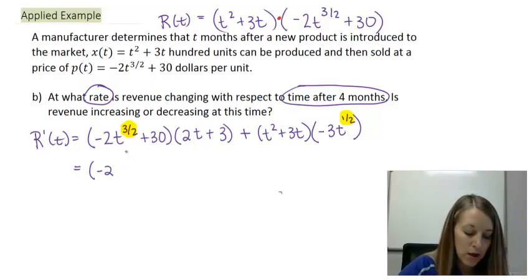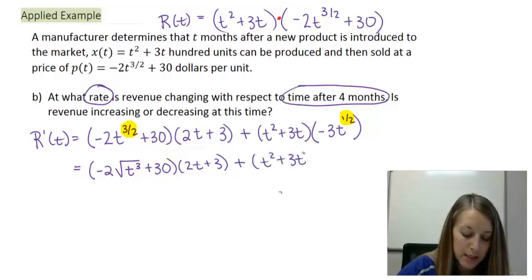So this is -2. Now my denominator is 2, so that gives me the square root of t³ plus 30, times 2t + 3, plus t² + 3t, minus 3. My denominator is 2, so again I have the square root, and that is t to the first power, or just t.